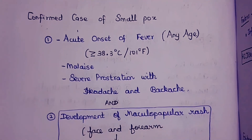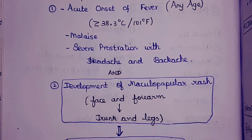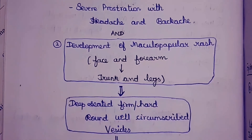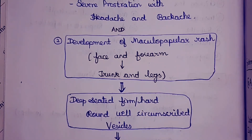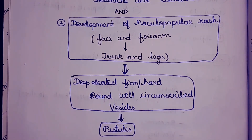Two additional features for case confirmation include the development of maculopapular rash, which is centrifugal in nature — first appearing on the face and forearm, then spreading to the trunk and legs. Deep-seated, firm, hard, round, well-circumscribed vesicles are present, which then turn into pustules and subsequently into scabs.